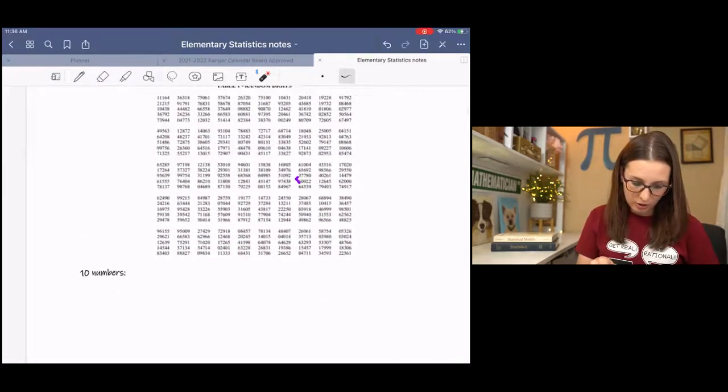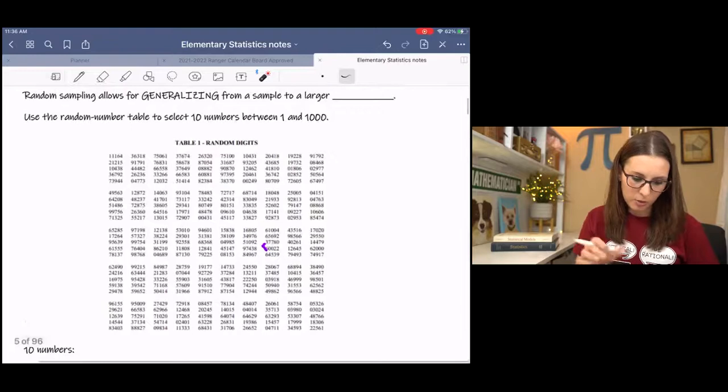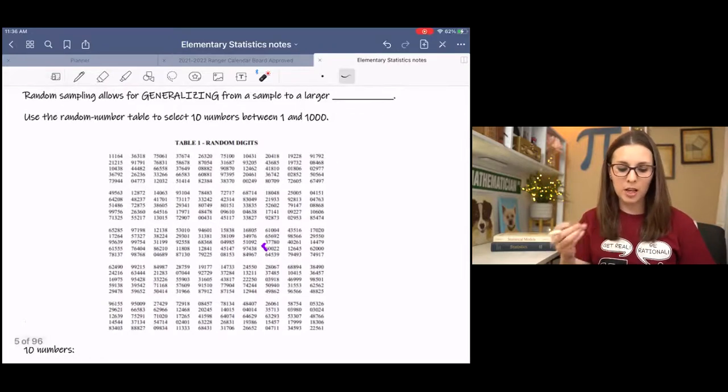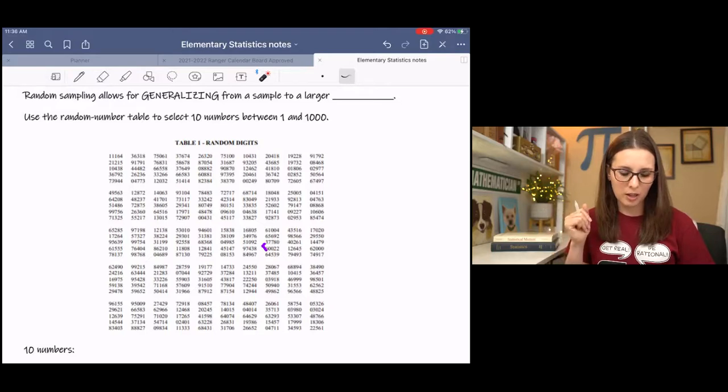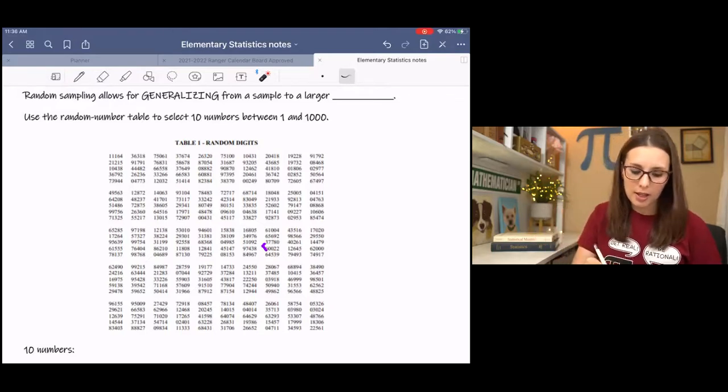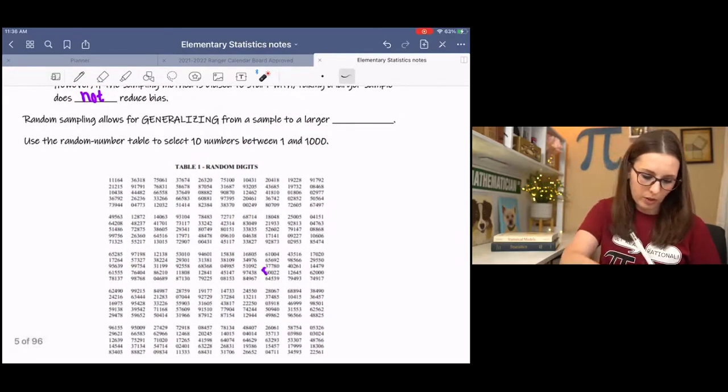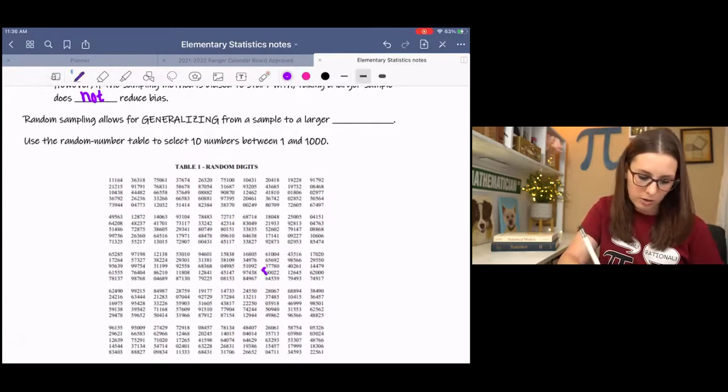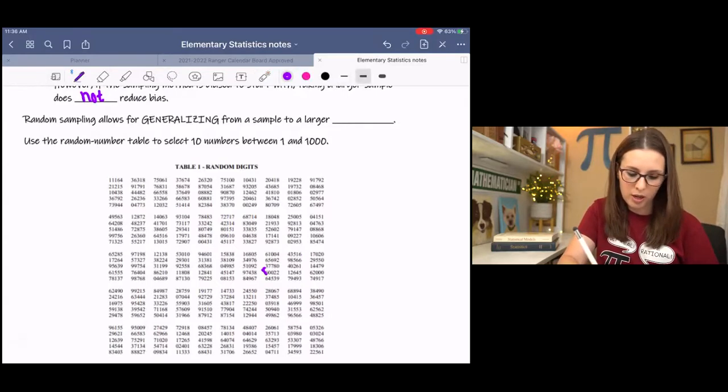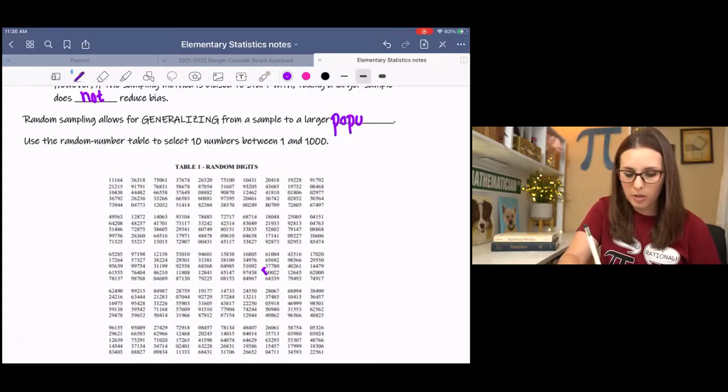You and I might be getting totally different samples because it's supposed to be random. And the idea here, use a random number table to select 10 numbers. This is a small sample, but for the sake of the notes, we'll go with 10. Between 1 and 1,000, this is the key here. Oh, I forgot. Random sampling allows for generalizing from a sample to a larger population.